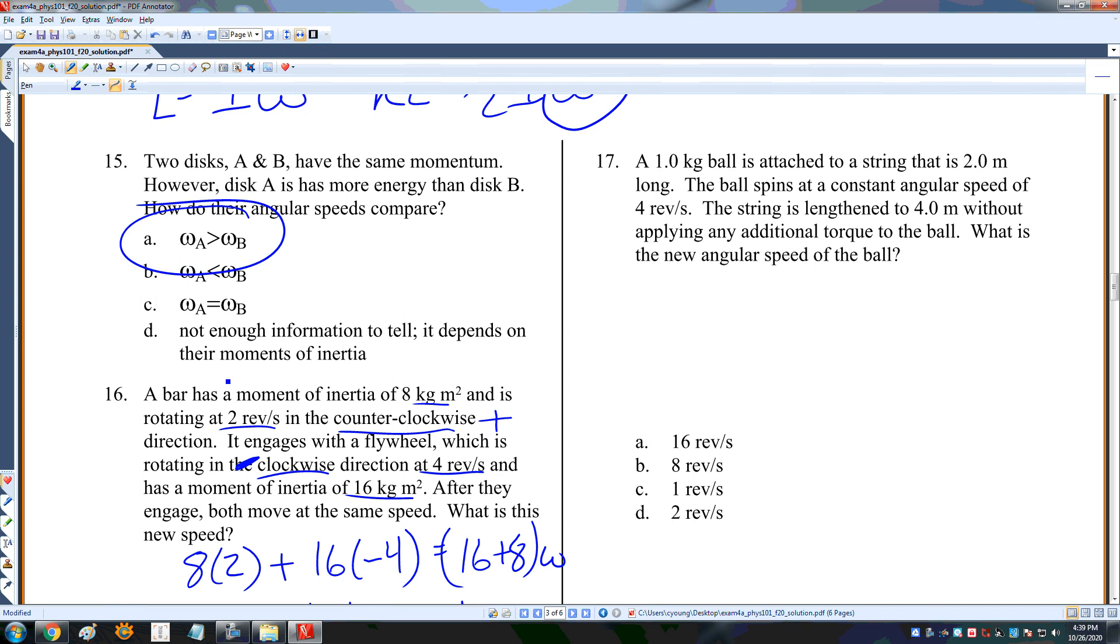One kilogram ball is attached to a spring that is 2 meters long. The ball spins at a constant angular speed of 4 revolutions per second. The string is lengthened to 4 meters. What is the new angular speed? I have a ball on a string, then a ball on a longer string. My moment of inertia is going to be bigger, so it has to be going slower. My moment of inertia is 1 kilogram times 2 squared, or 4. Here my moment of inertia is 1 kilogram times 4 squared, or 16. My moment of inertia has gone up by a factor of 4, so my speed has gone down by a factor of 4.